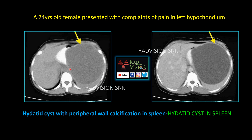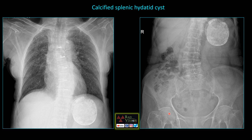Next case: a 24-year-old female presented with complaints of left hypochondrium pain. You can see there is a large cystic lesion noted in the spleen with eccentric rim calcification, and the cystic lesion shows peripheral rim enhancement. This is a hydatid cyst in the spleen. In the next case, you can clearly see a calcified lesion noted in the spleen — this is a completely calcified splenic hydatid cyst.